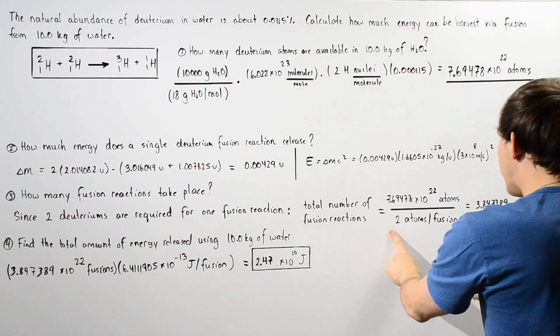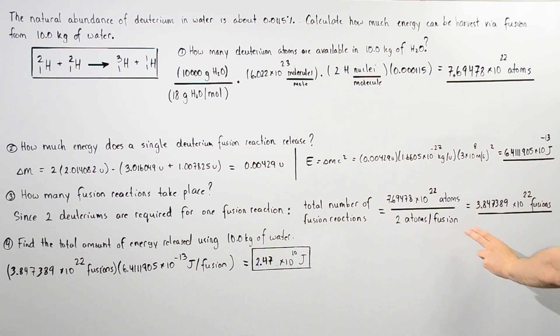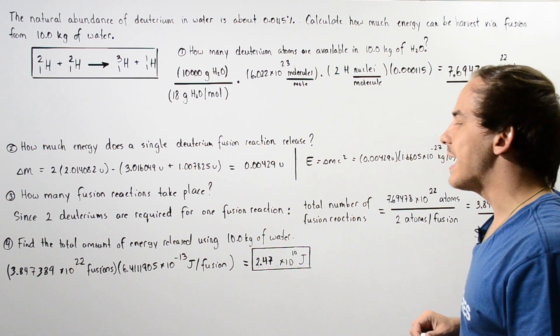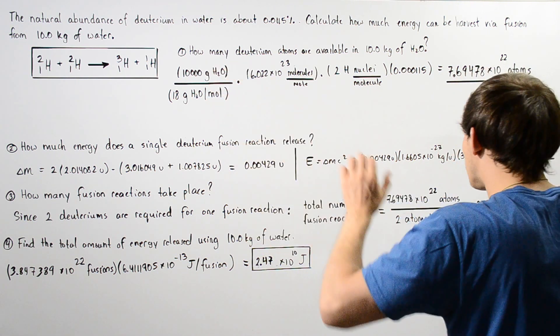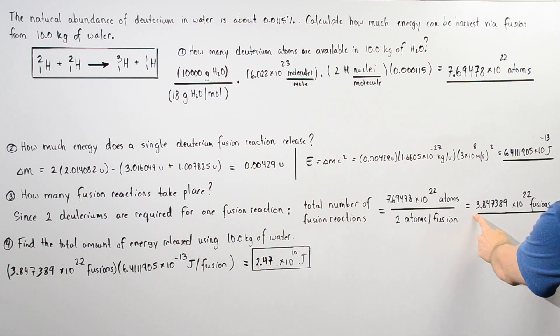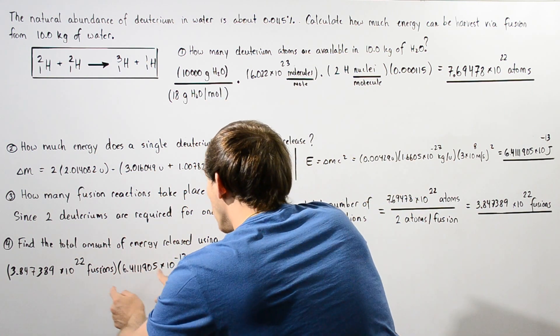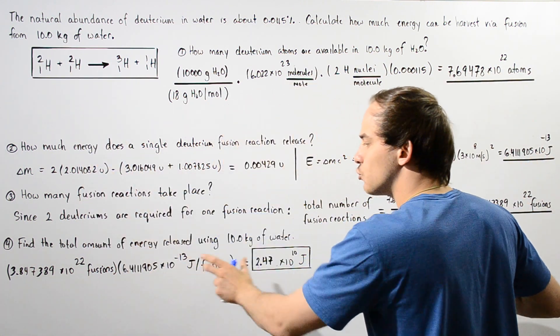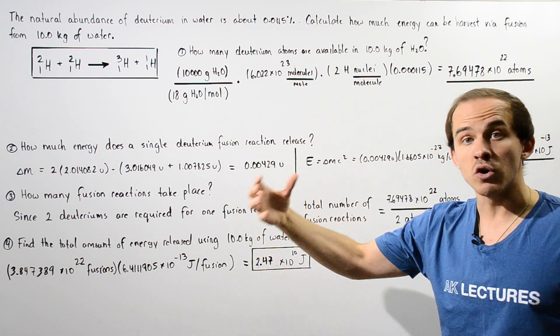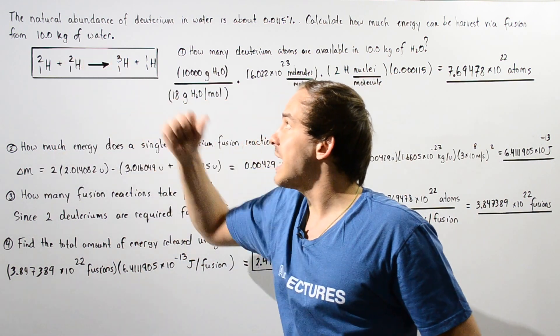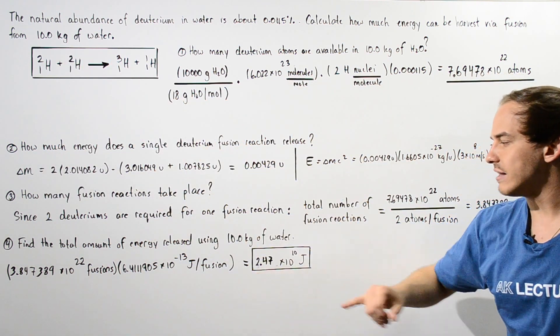And now in step four to calculate the total amount of energy released in the 10 kilograms of water that undergoes fusion, we take this quantity and multiply it by the amount of energy released in a single fusion reaction. And we get the total amount of energy released in the fusion of 10 kilograms of water is about 2.47 × 10^10 joules of energy.